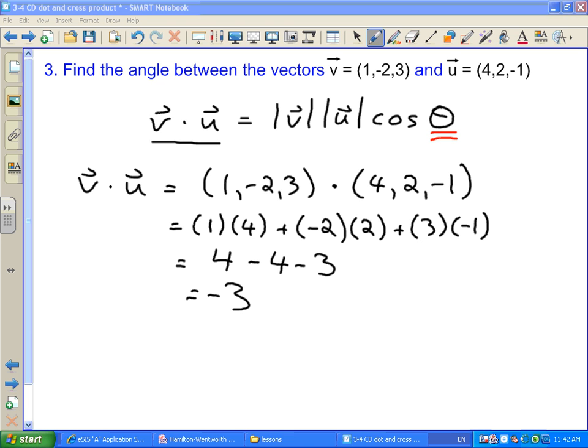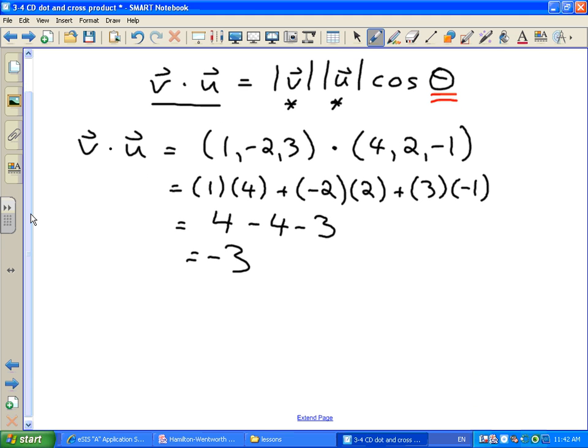We want to solve for theta over here on the right, so we've got two more things that we have to figure out. The magnitude of V and the magnitude of U. Now, how do we get the magnitudes of these two vectors? Exactly. We're just taking the square roots of all of these components squared. So for V we're going to have 1 squared plus negative 2 squared plus 3 squared. And we just punch this in and work it out. What do we get here? Root 14.